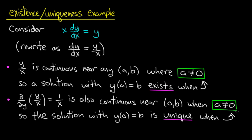Therefore, by the uniqueness part of the theorem, a solution with y(a) equals b exists and is unique so long as a is not equal to 0. Again, if a equals 0, the hypotheses of the theorem are not satisfied, so I know nothing about uniqueness — in addition to existence — from before.